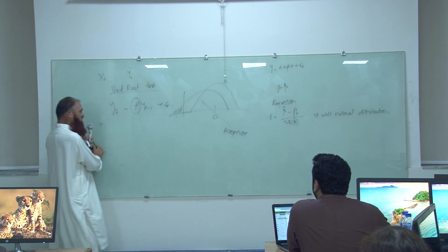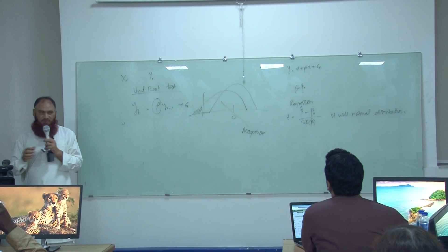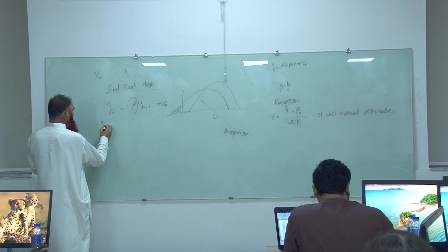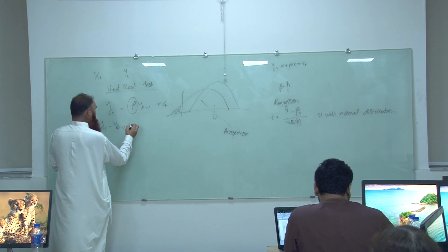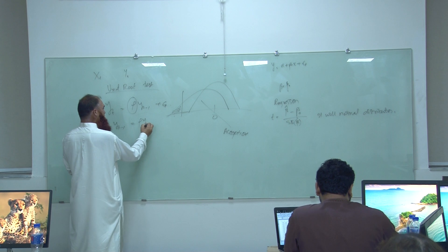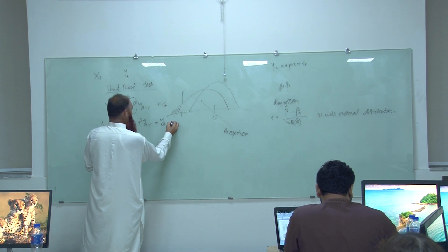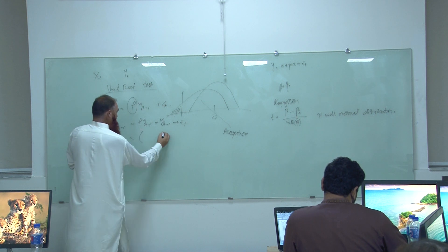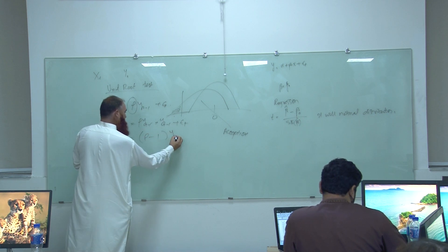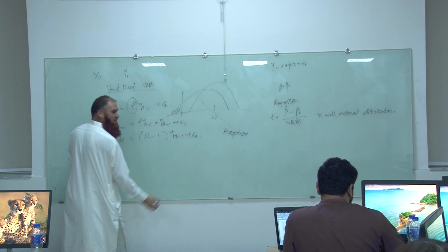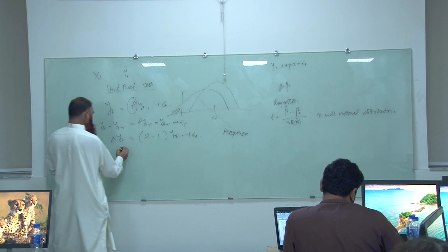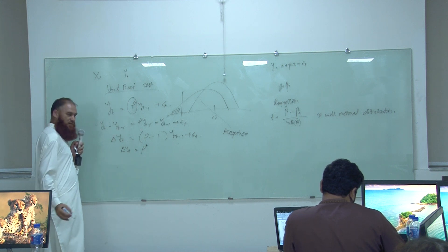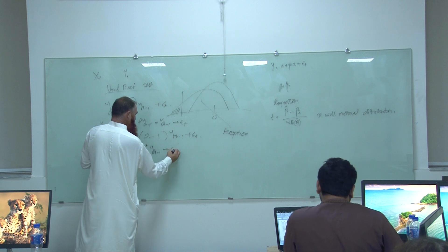There is one modification which needs to be done. Basically, if you subtract yt-1 on both sides, you will get yt minus yt-1, which is equal to rho·yt-1 minus yt-1 plus epsilon_t. So you can write this as Δyt equals (rho minus 1)·yt-1 plus epsilon_t, which I can write as Δyt equals rho*·yt-1 plus epsilon_t.